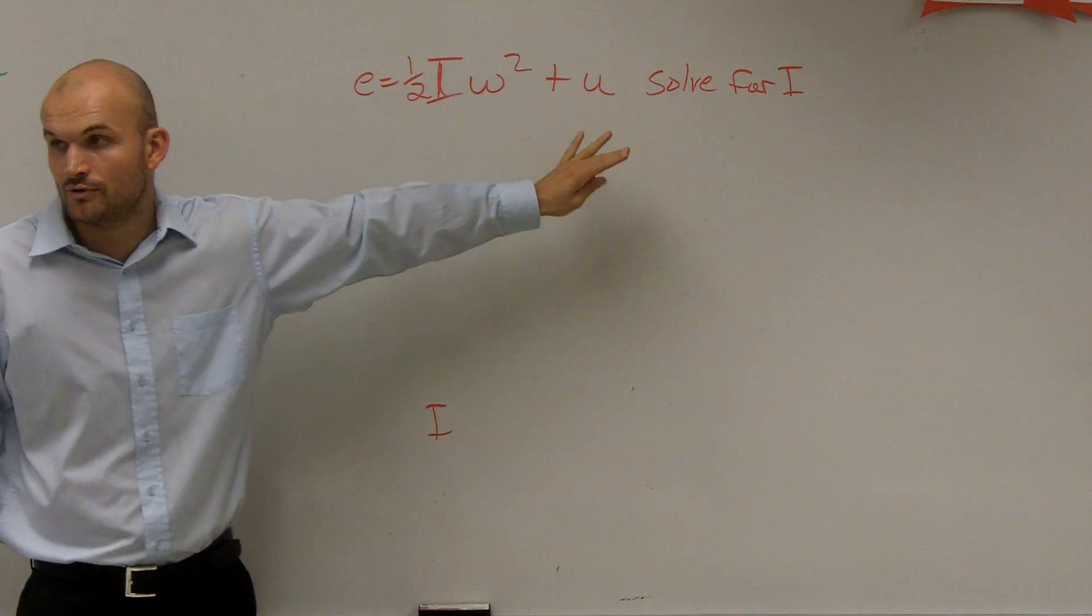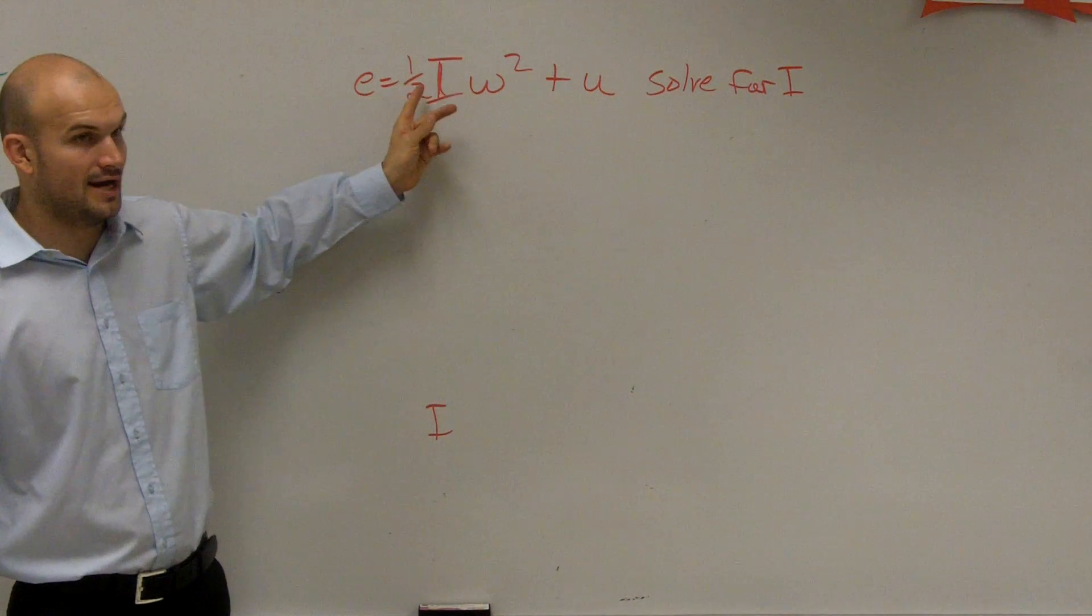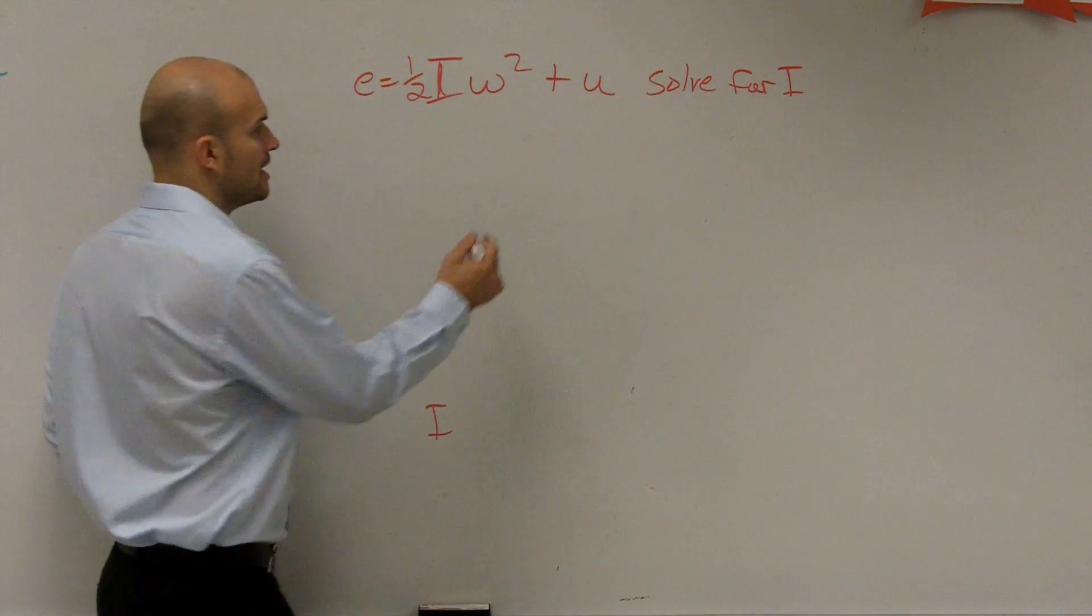The first thing we undo is whatever is adding or subtracting to our variable i. Now, since I'm adding a u, I'm going to subtract it.